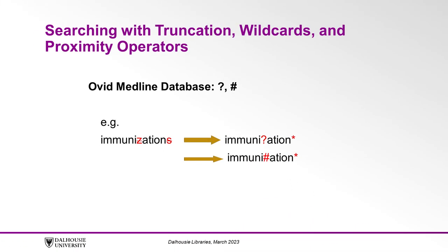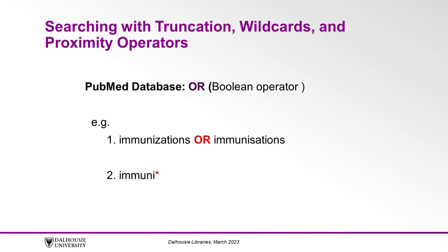Ovid Medline also allows the use of a wildcard symbol within a keyword, and like CINAHL, you can use either a question mark or a pound or hashtag symbol. In PubMed, wildcard searching within a keyword is not an option, but you could enter alternate spellings of your keyword using OR — for example, searching 'immunizations' with a Z or 'immunisations' with an S. You could also still use truncation with 'IMMUNI*' to get even more results.